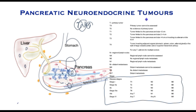Because these are slow growing tumours, the treatment is significantly different to the common variety of ductal adenocarcinoma, and I will explain this in the second video. This ends the first part — for diagnosis and treatment, please see the second video in the series.